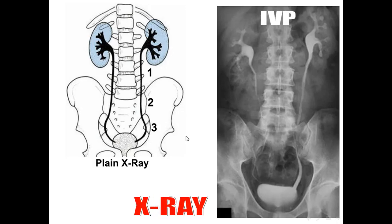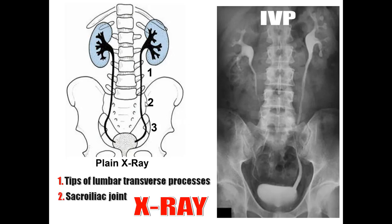Regarding the X-ray appearance of the ureter in plain X-ray and in IVP: in plain X-ray, the ureter descends along the tips of the lumbar transverse processes, then crosses the sacroiliac joint, and then the ischial spine. On IVP, the minor calices, major calices, renal pelvis, ureter, and urinary bladder are all visible, with the ureter descending along the lumbar transverse processes, sacroiliac joint, and ischial spine.